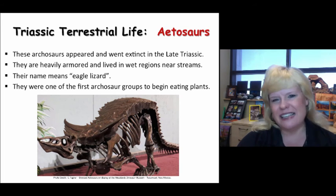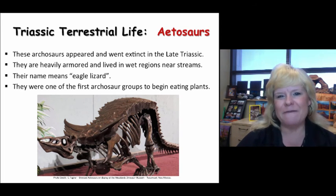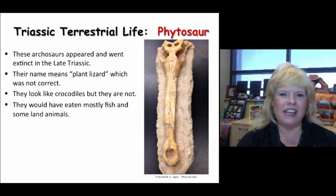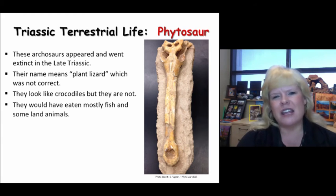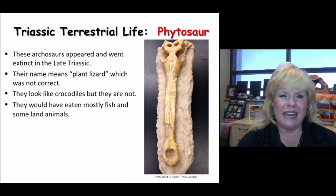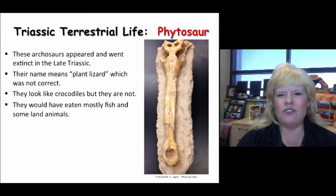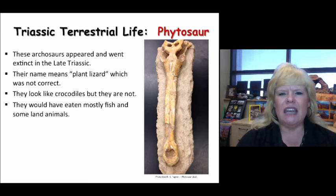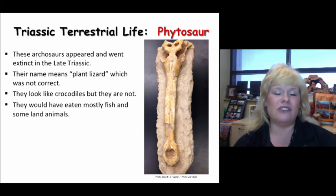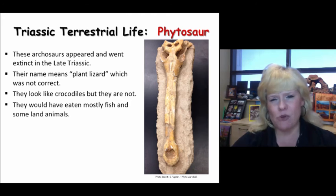Aetosaurs went extinct at the end of the Triassic, never to be heard from again. Phytosaurs look a lot like crocodiles, but they're not. While related and under the same crocodilian clade, they are morphologically different. The name phyto means plant, so phytosaur means plant lizard. They were misnamed when originally described in scientific papers — the first fossils discovered didn't have the teeth to go with them, just the sockets.